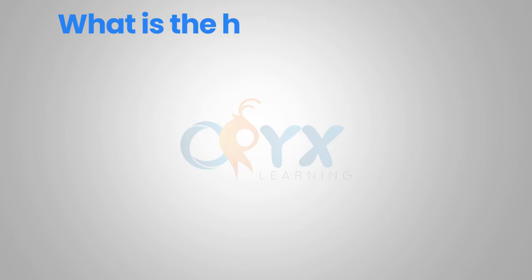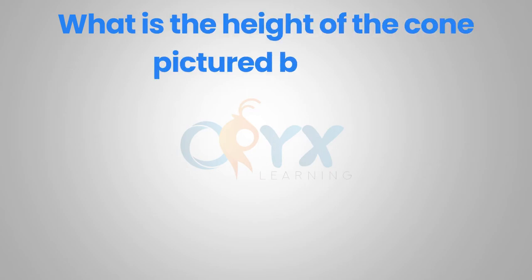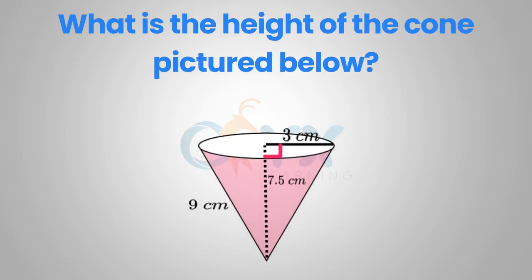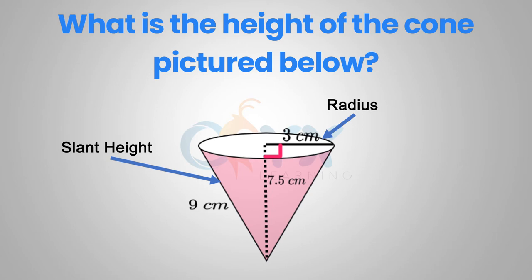What is the height of the cone pictured below? As we can see, the slant height would be 9 cm, the radius would be 3 cm, and the actual height of the cone is 7.5 cm.